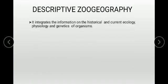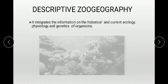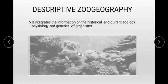Next is descriptive zoo geography, which means described in detail. It covers information on the historical and current ecology, physiology, and genetics of organisms — their past and present physiology, their functioning, how many changes are occurring for survival, and the genetics of organisms including ancestral studies and evolution history — all are discussed in descriptive zoo geography.